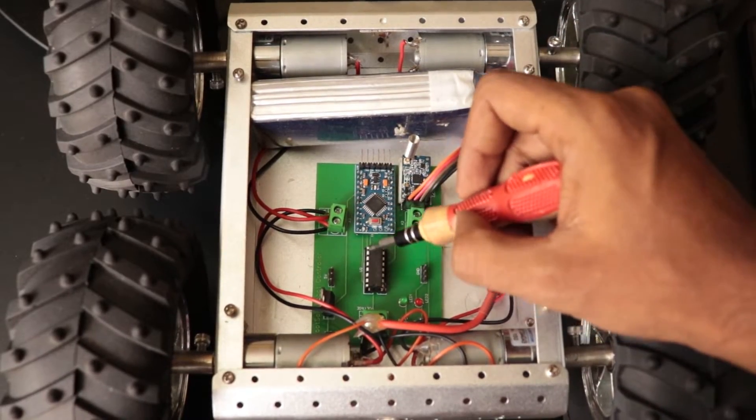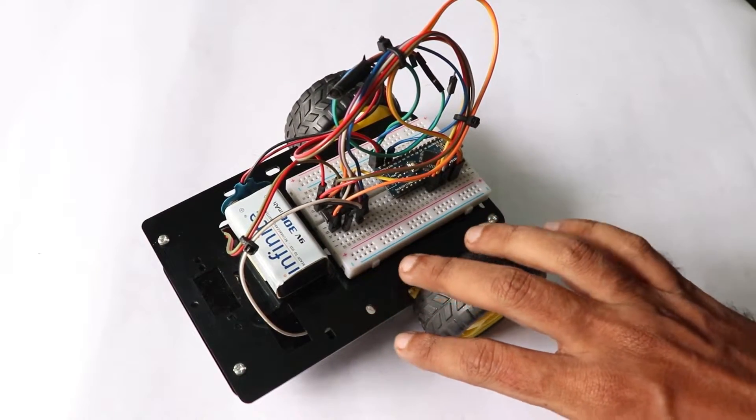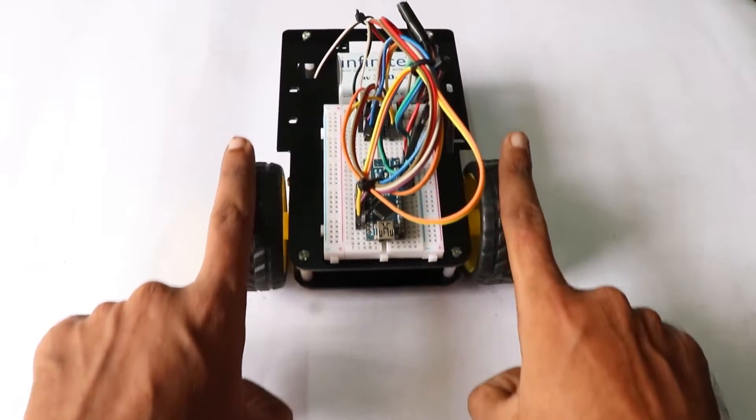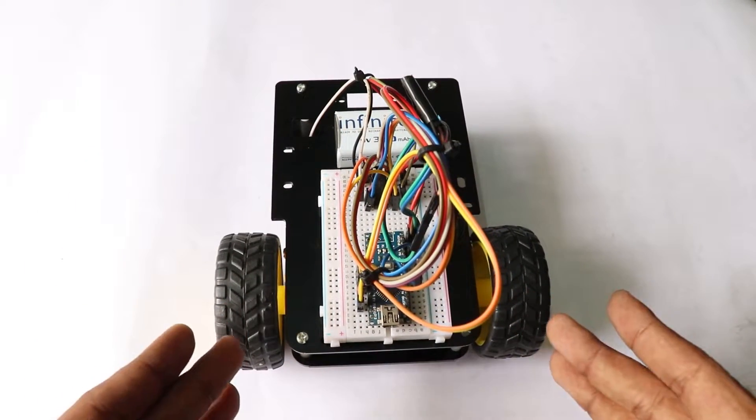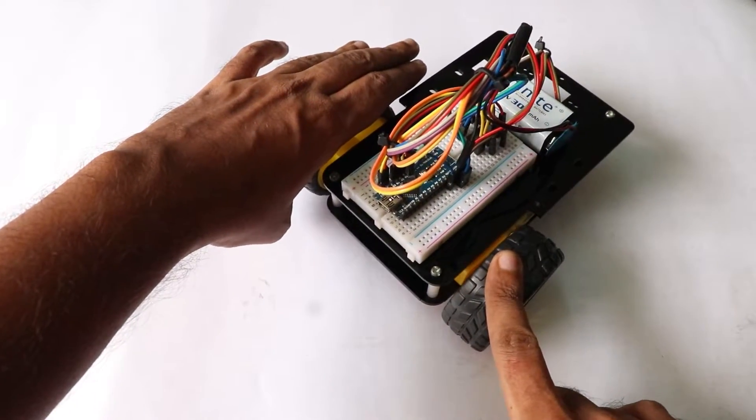But if you need to change the direction of rotation, we can use simple H-bridge circuits. In one of our previous videos we explained how L293D motor driver IC works and how we can drive a robot using Arduino and L293D motor driver IC.